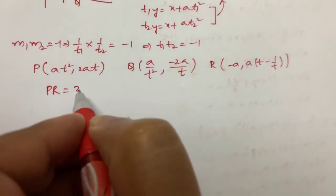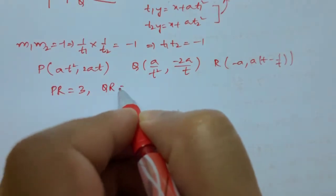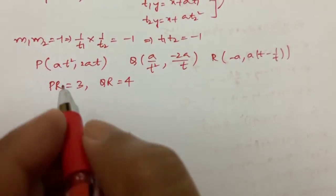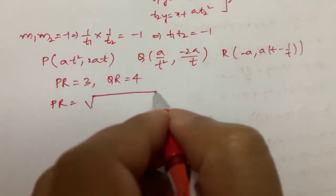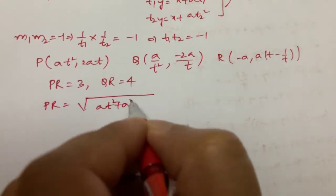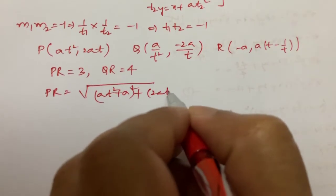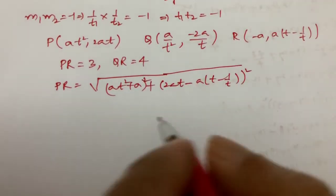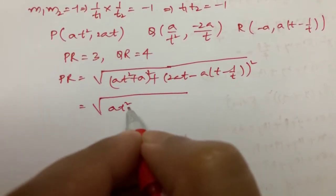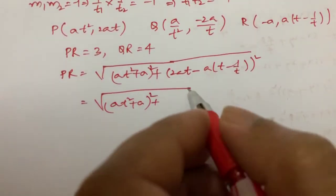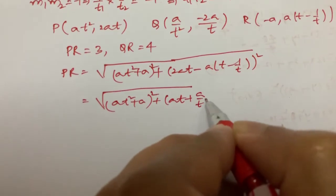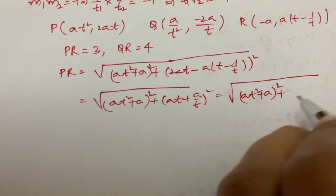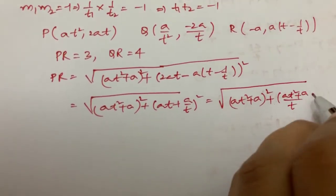We are given that PR = 3 and QR = 4, or in reverse order. PR equals the distance between P and R: √[(at² + a)² + (2at − a(t − 1/t))²]. Simplifying, the first term is (at² + a)² and the second term is (at + a/t)². So PR = (at² + a)√(1 + 1/t²).